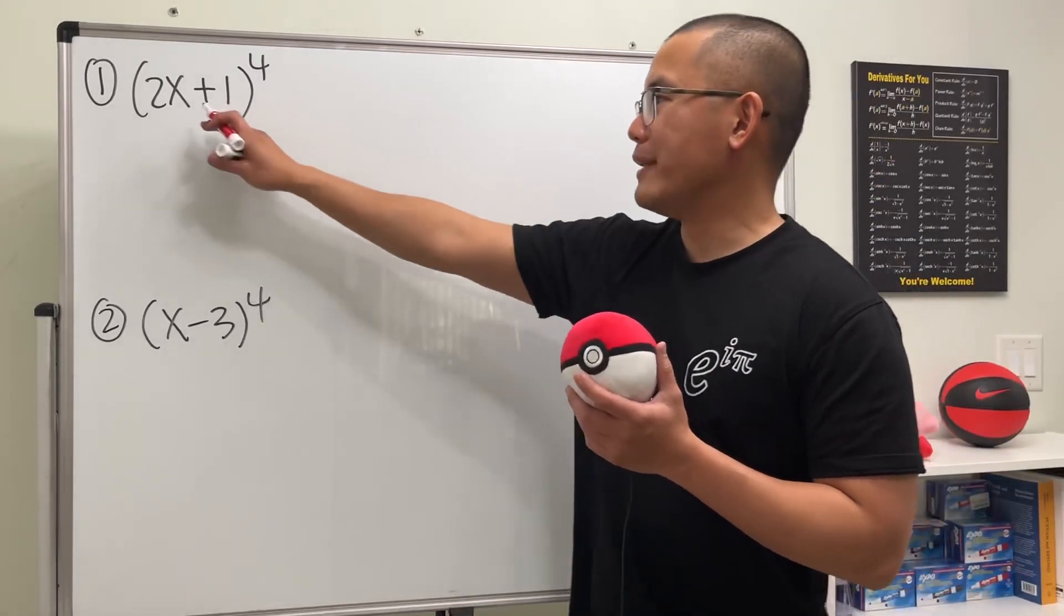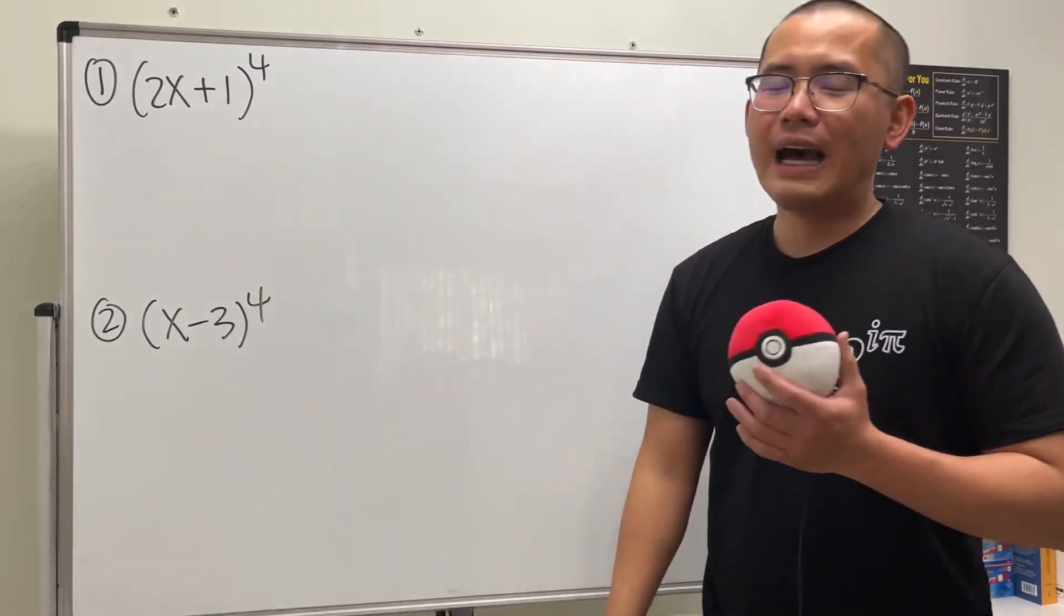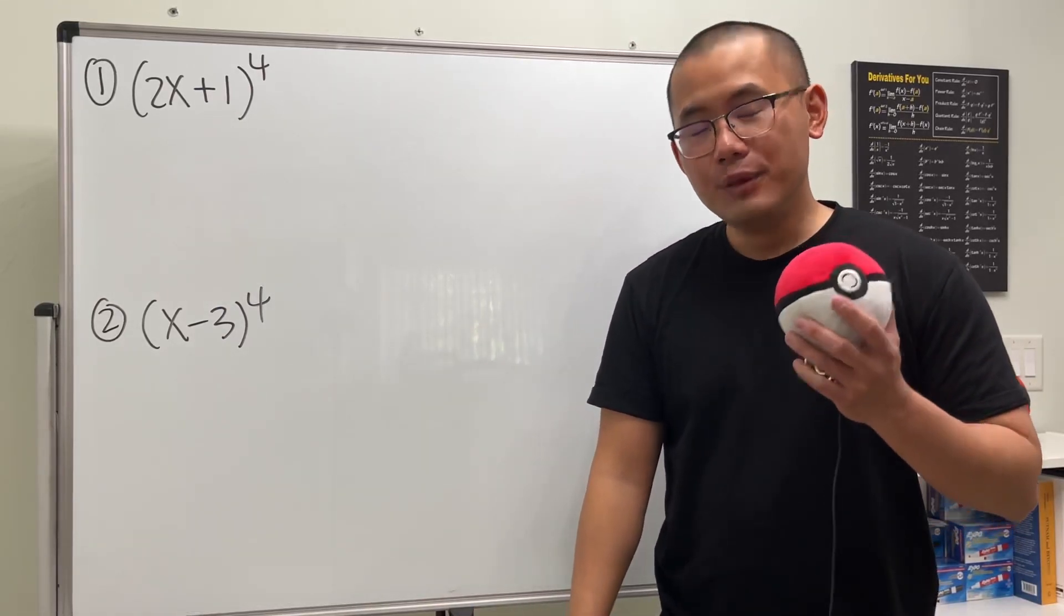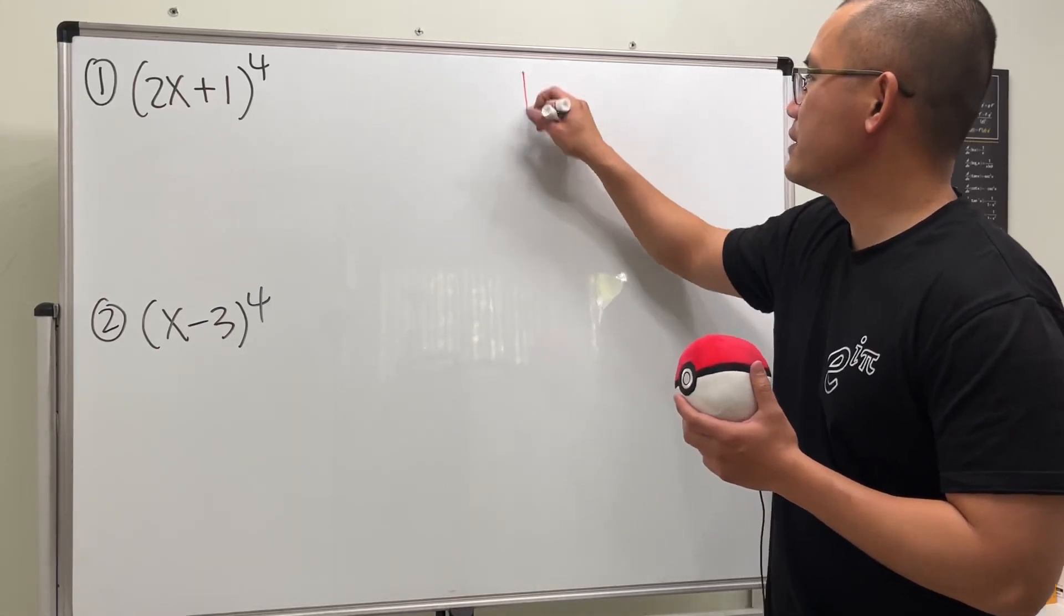So how do we expand a binomial to a fourth power? I would not recommend you guys to write this out four times and multiply it out. Use the Pascal's triangle. It would be so much better.